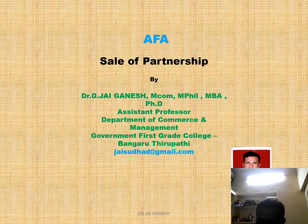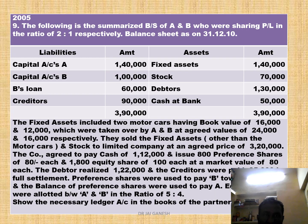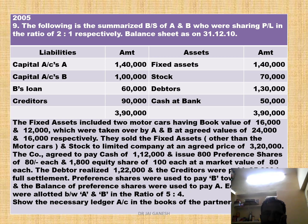Hello, Namaskara. Today we will solve a problem on sale of partnership. The following is a summarized balance sheet of A and B who were sharing profit and loss in the ratio of 2 to 1 respectively. The balance sheet is as on 31st December 2010.